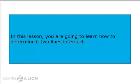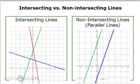In this lesson, you are going to learn how to determine if two lines intersect. Lines can be intersecting or non-intersecting. Intersecting lines can intersect in any way or any angle. There's a special type of intersecting lines that we call perpendicular that intersect at a right angle. And non-intersecting lines are just parallel lines. They go on and on forever and they don't ever cross or intersect.